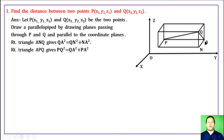Again, considering right triangle APQ with right angle at P and angle PAQ, the hypotenuse gives us: PQ² = QA² + PA².